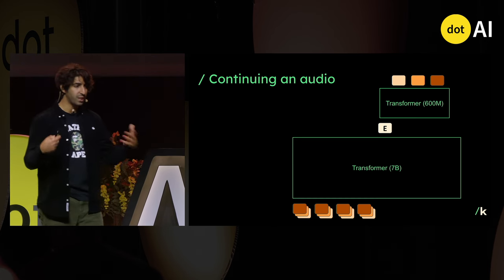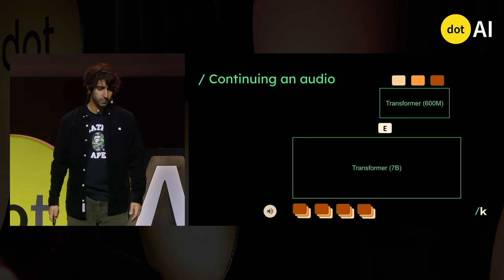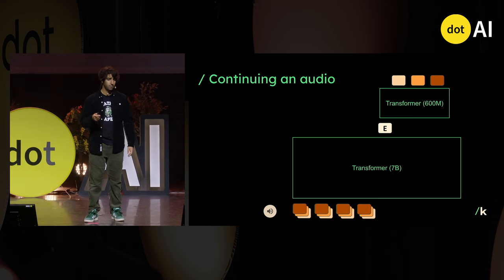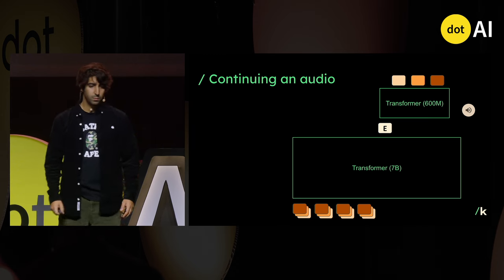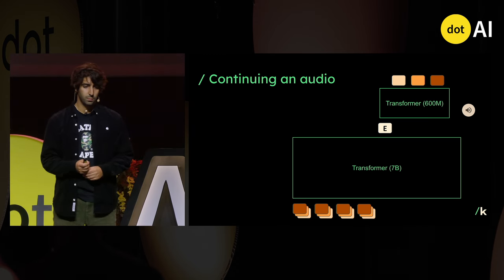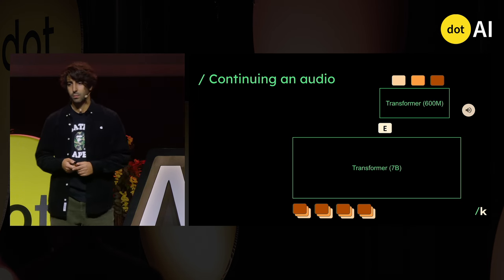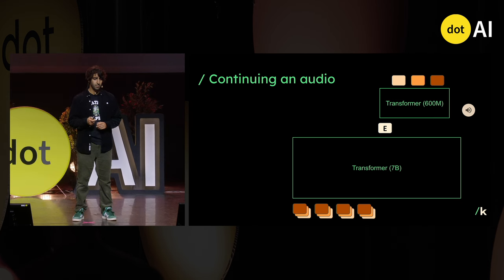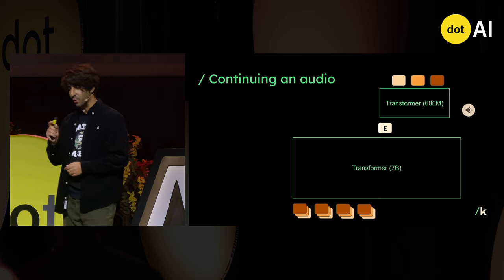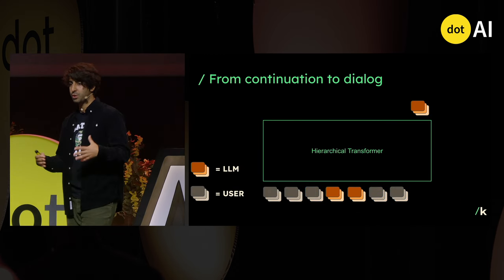Now we have a generative model of audio, and we can do everything you can do with a text model. You're familiar with prompting — you prompt a model and let it continue. We can do the same with audio. [Demo: audio continuation in the style of Rick and Morty.] Now we have a continuation model. However, continuation is not really the task we're interested in — we want to make a dialogue system.